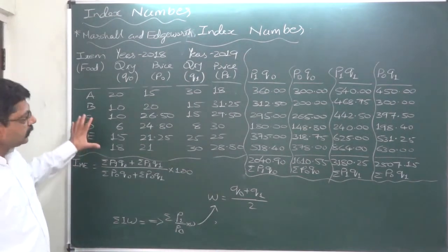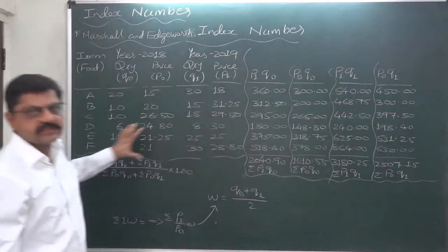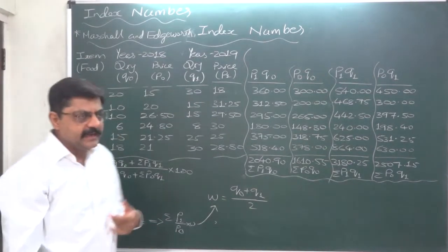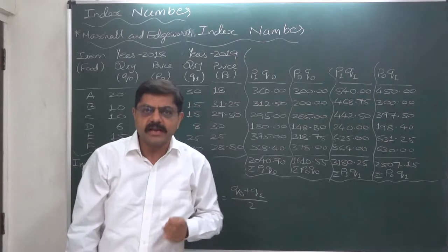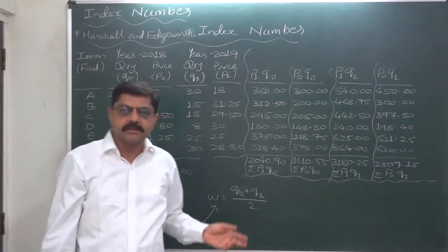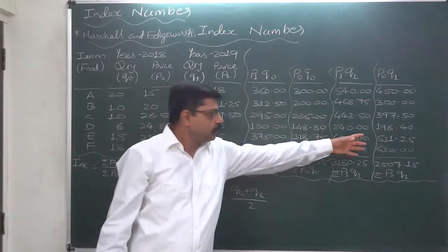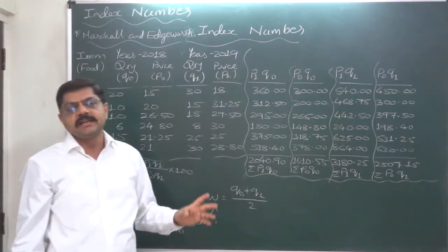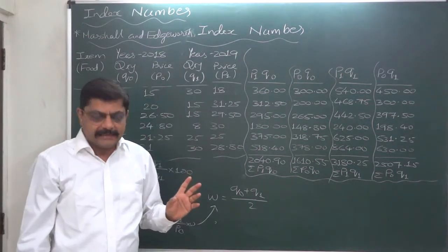So the working part remains the same. So in case in your examination, if you are asked to calculate Fisher's, Dorbys and Bowley and Marshall Hoverty index numbers, then also you will have to prepare this one table only and you will be able to calculate all these three index numbers easily.